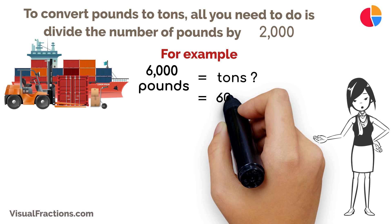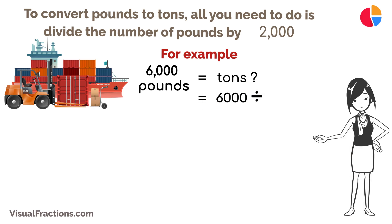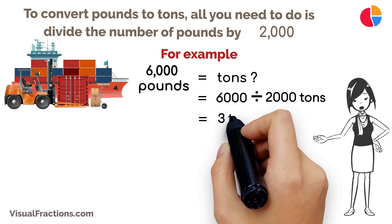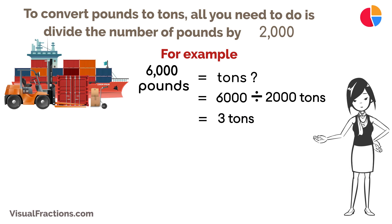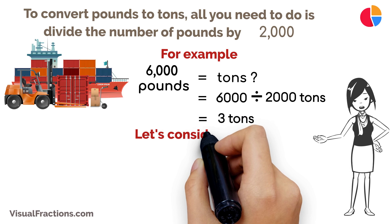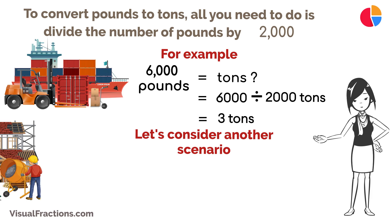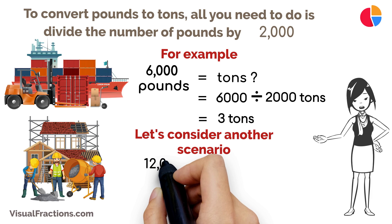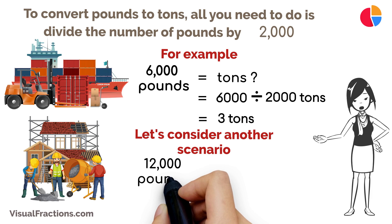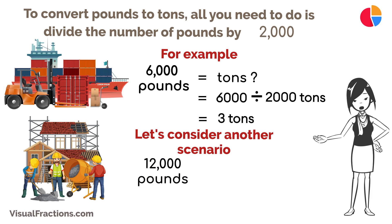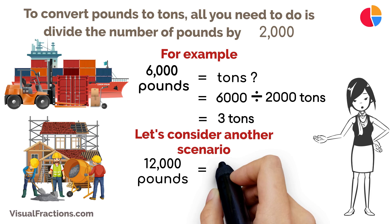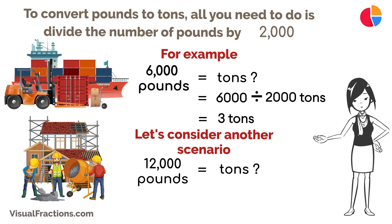That gives you a total of three tons. Let's consider another scenario: if you're a construction worker and you have twelve thousand pounds of building materials to calculate in tons, the conversion is straightforward — just divide twelve thousand pounds by two thousand.